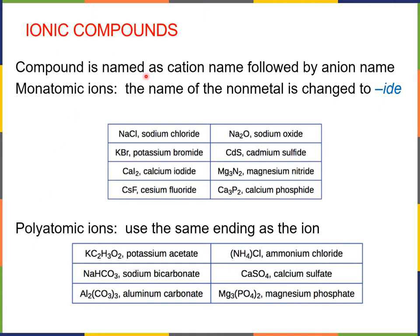The simplest ionic compounds are made up of a metal cation and a nonmetal anion. In this case, the name of the compound is simply the name of the cation followed by the name of the anion — the name of the metal followed by the name of the nonmetal, with its ending changed to -ide. So here we have sodium chloride. The sodium cation is simply called sodium. The anion that derives from chlorine is called chloride. The metals keep their name when they become ions. The nonmetals change their ending to -ide when they become ions.